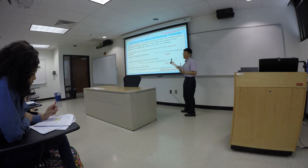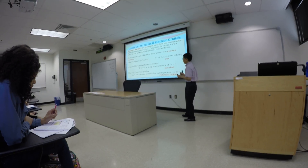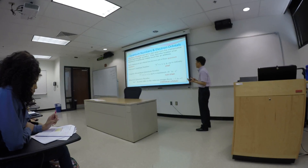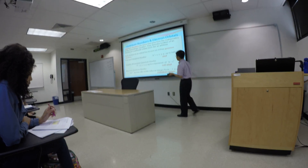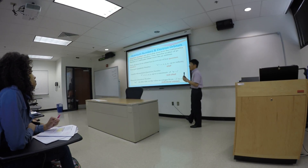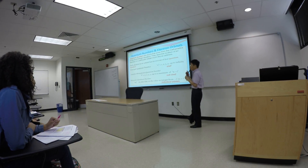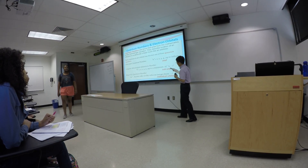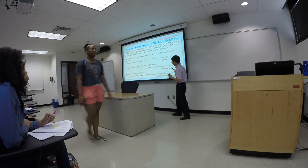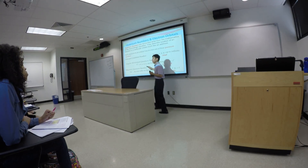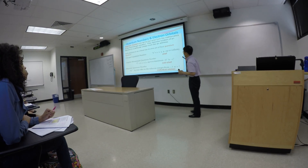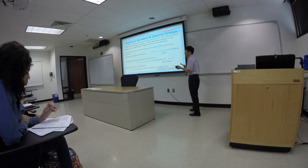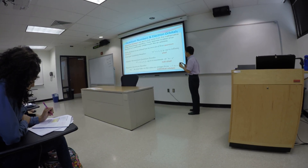The angular momentum quantum number L is the sub-shell. Within each shell, you may have two, three, or five different sub-shells. L represents the sub-shell, starts with zero, and goes all the way up to n minus one. So if n equals one, there is only one possibility for L — zero. If n equals two, L can be zero or one.